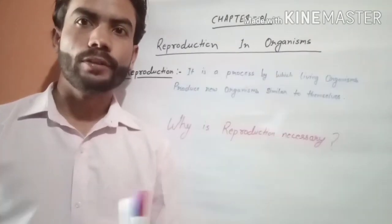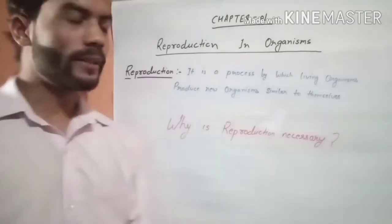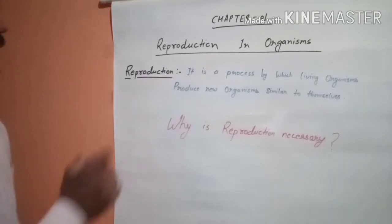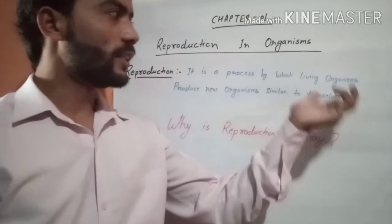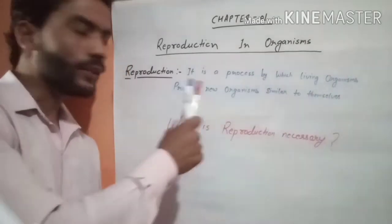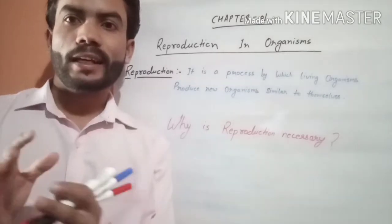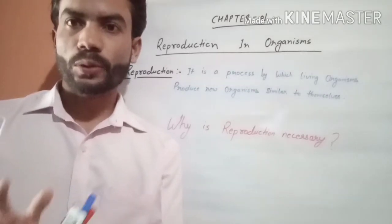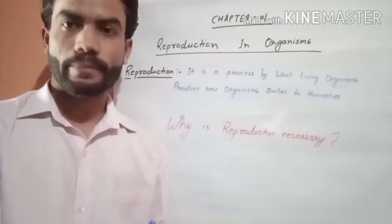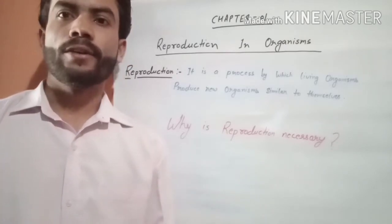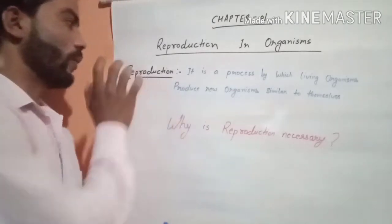Firstly, we will discuss the meaning of the chapter name. Reproduction का मतलब क्या होता है? It is a process by which living organisms produce new organisms similar to themselves. मतलब living organisms एक ऐसी process करते हैं जिससे वो अपनी जैसे दिखने वाले, similar function करने वाले organisms को produce करते हैं। उस process को हम reproduction बोलते हैं।